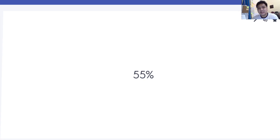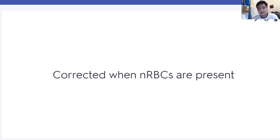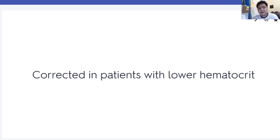Wintrobe is the ESR method which requires correction. Westergren is the ESR method not requiring correction. WBC count is corrected when nucleated RBCs are present — please remember when to perform correction for WBC count. Reticulocyte count is corrected in patients with lower hematocrit — please review the formula for the corrected reticulocyte count.